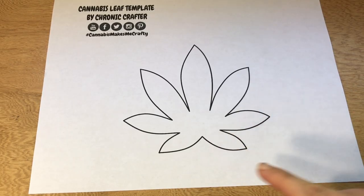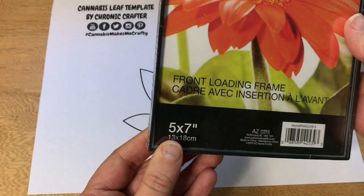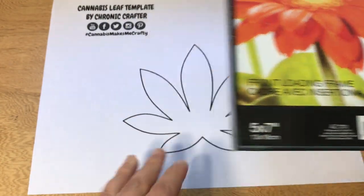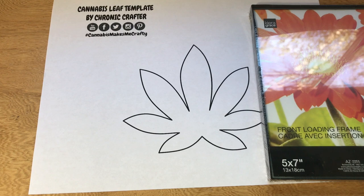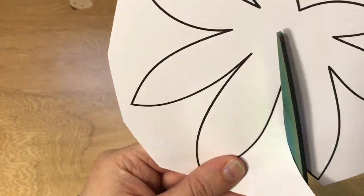So here's my template. I sized it to fit perfectly inside a 5 inch by 7 inch frame, so the first step is to cut out the leaf. Boom! And we have a leaf.